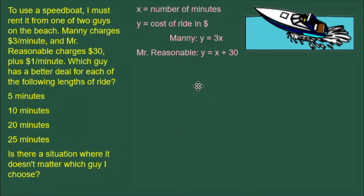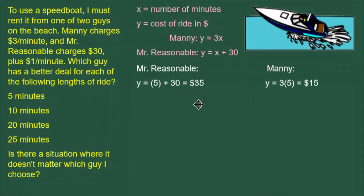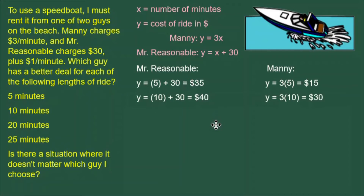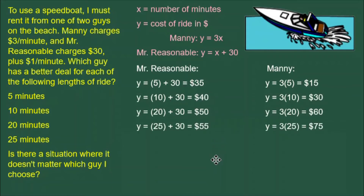What we have to do is plug X equals 5, X equals 10, X equals 20, and X equals 25 into each of these equations. For Mr. Reasonable, 5 minutes costs $35, and for Manny it costs $15. 10 minutes is $40 with Mr. Reasonable and $30 with Manny. 20 minutes costs $50 with Mr. Reasonable and $60 with Manny. And 25 minutes costs $55 with Mr. Reasonable and $75 with Manny.